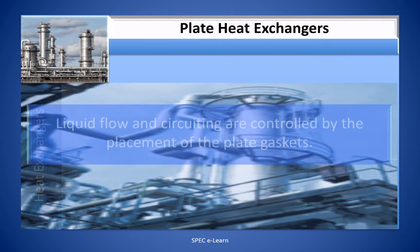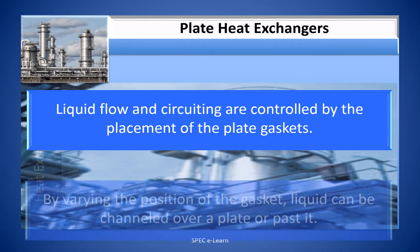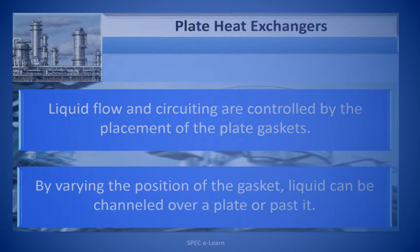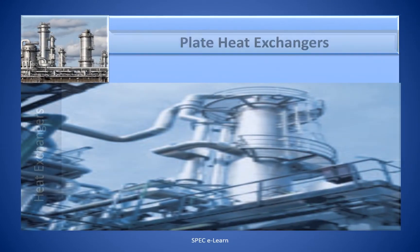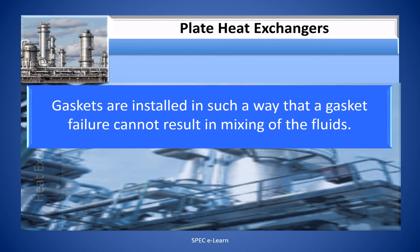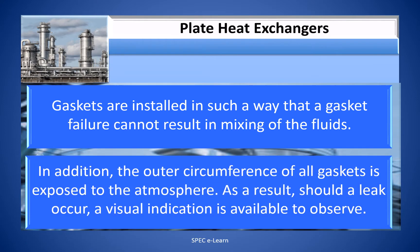The liquid flow and circuiting are controlled by the placement of the plate gaskets. By varying the position of the gasket, liquid can be channelled over a plate or bypassed. Gaskets are installed in such a way that a gasket failure cannot result in mixing of the fluids. In addition, the outer circumference of all gaskets is exposed to the atmosphere, so should a leak occur, a visual indication is available to observe.